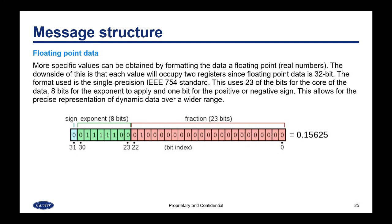More specific values can be obtained by formatting the data as a floating point number, or real number. The downside is that each value will occupy two registers since floating point data is 32-bit. The format used is the single precision IEEE 754 standard. This uses 23 of the bits for the core of the data, 8 bits for the exponent, and 1 bit for the positive or negative sign. This allows for the precise representation of dynamic data over a wider range, and because it uses the IEEE 754 standard, the PLC will have an accompanying data format.